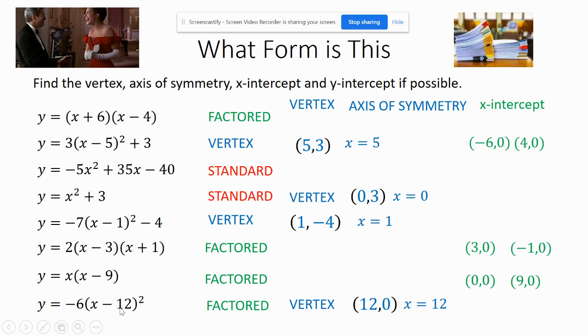And this one here is just going to have one. It is possible to only have one. That means because the vertex, notice the vertex is at twelve, zero. That's also the x intercept. That's the only time that you can have one for an x intercept in a quadratic is if it's at the vertex. So now I found the vertex, axis of symmetry and x intercepts on the ones that are easy.